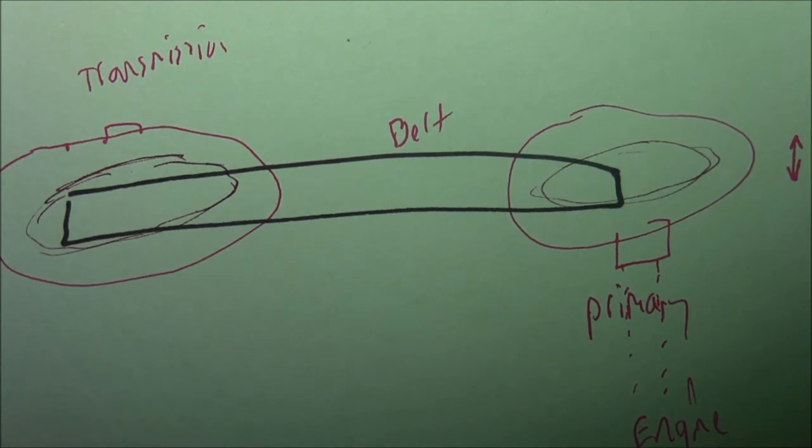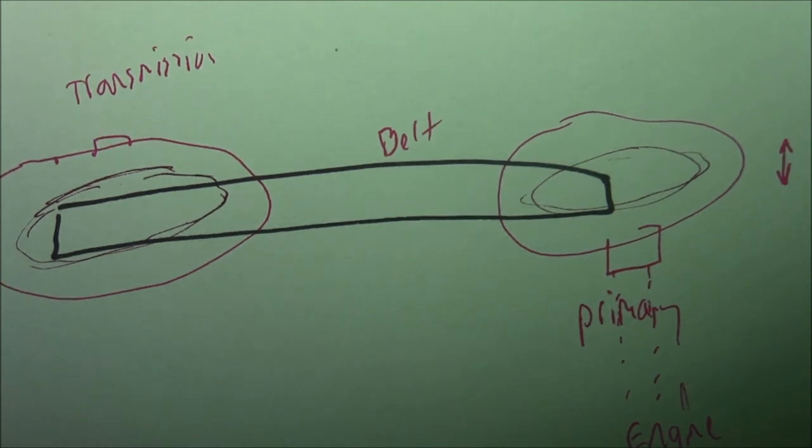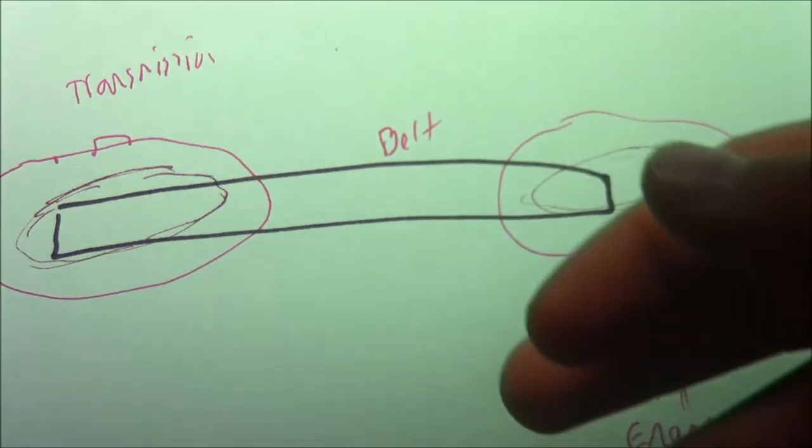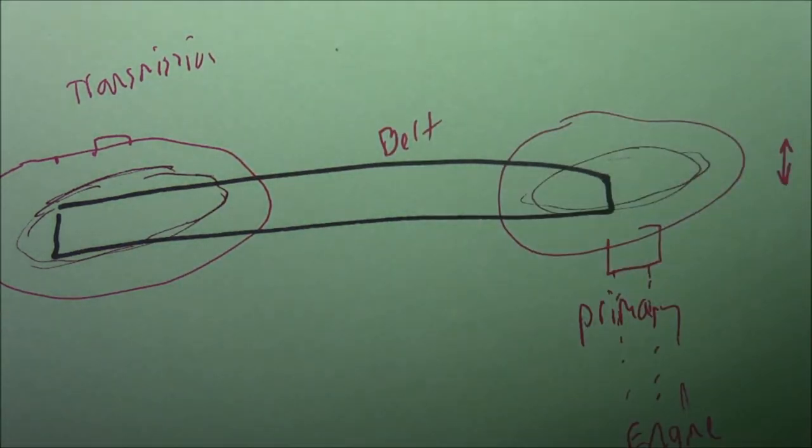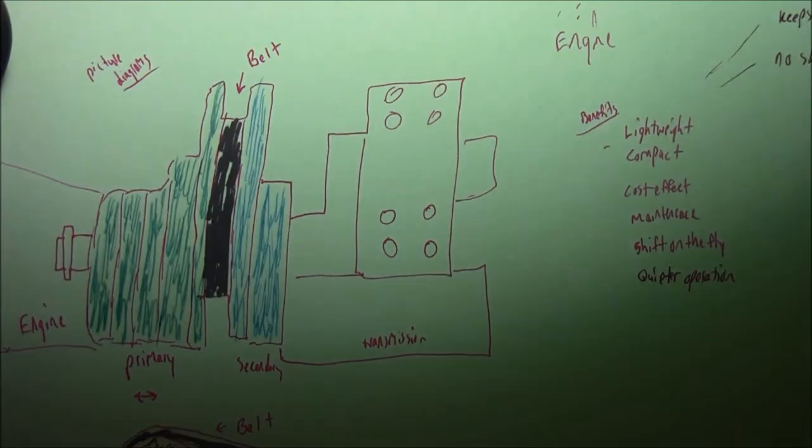CVTs, continuous variable transmissions, are used in tractors, aircraft since the 1950s, snowmobiles, motor scooters, drill presses, milling machines, and combine harvesters. Leonardo da Vinci first conceptualized the CVT in 1490.